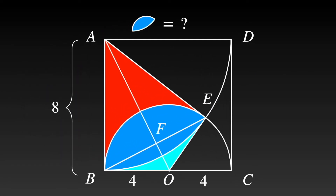Construct AO. AB is equal to AE because they are the radii of the quarter circle. Similarly, OB is equal to OE because they are the radii of the semicircle. So triangles AOB and AOE are congruent, which means angle OAB is equal to angle OAE. Label the angles as alpha.